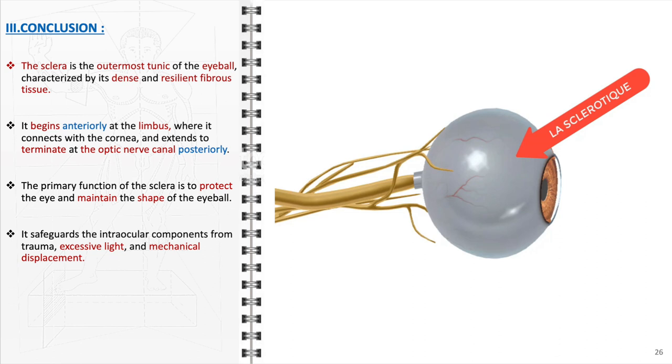Its protective role is multifaceted. The sclera guards the intraocular components against physical trauma, excessive light exposure, and mechanical displacement. This is achieved through its ability to resist the considerable expansive forces exerted by intraocular pressure. As a result, the sclera plays a vital role in preserving the globe's shape, ensuring that the eye retains its form and structural integrity.